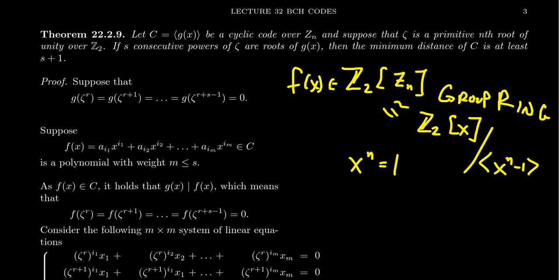Cyclic codes were in one-to-one correspondence with ideals of this group ring. And since this group ring is the quotient of a principal ideal domain, the group ring inherits the property that all of its ideals will be principal. Now, the group ring Z_2[Z_N] is not a principal ideal domain — it's not an integral domain, there are going to be proper divisors of zero — but it does inherit, as a quotient of a PID, the property that all of these ideals are going to be principal.